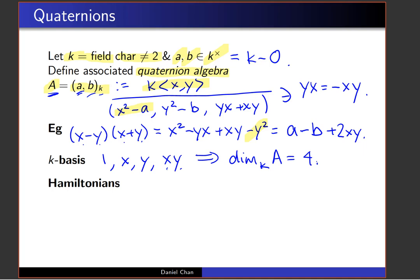The first and very famous example of a quaternion algebra is due to Hamilton in the mid-1800s. It's the special case where we work over the reals and both A and B equal −1. He used i and j instead of X and Y. The relations are: −1 = i² = j², meaning i and j are square roots of −1.